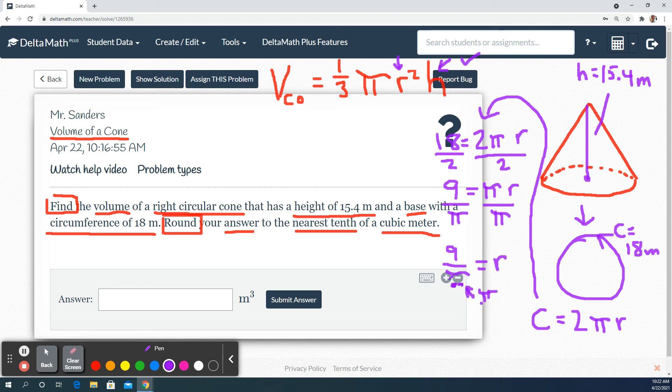So that right there is our pi. So r is nine over pi. So now I know that this is nine divided by pi. So we'll go ahead and plug everything in and go from there.